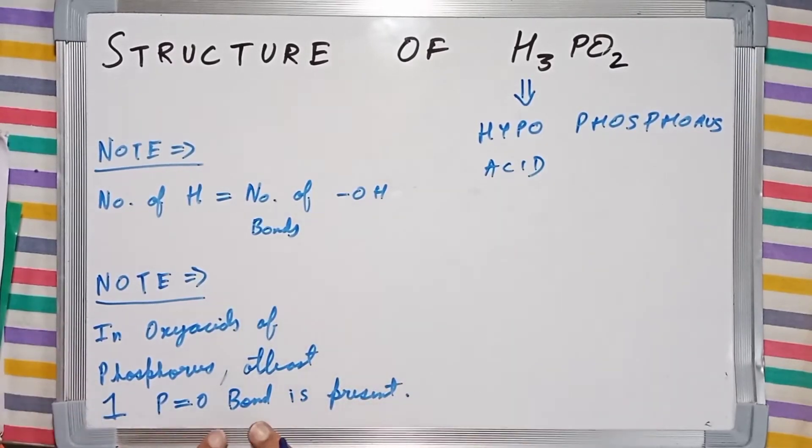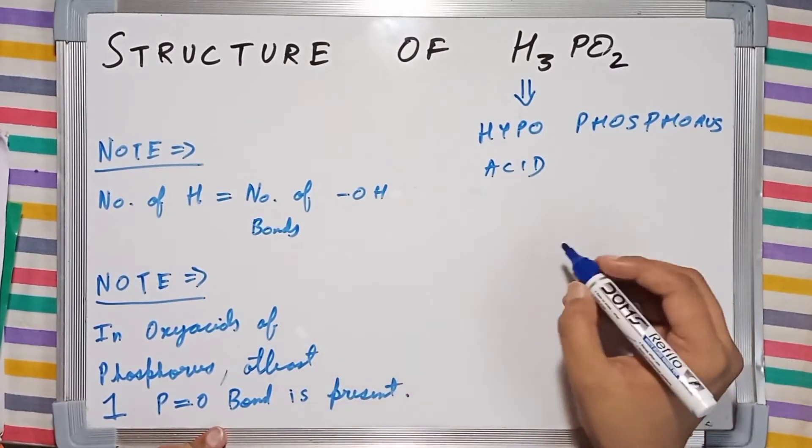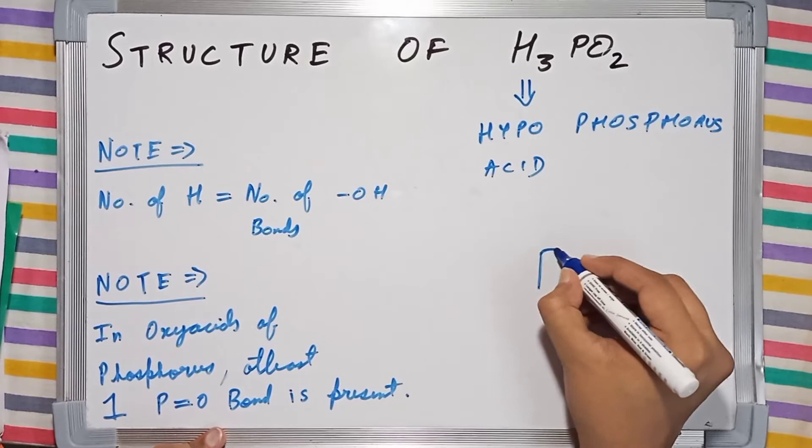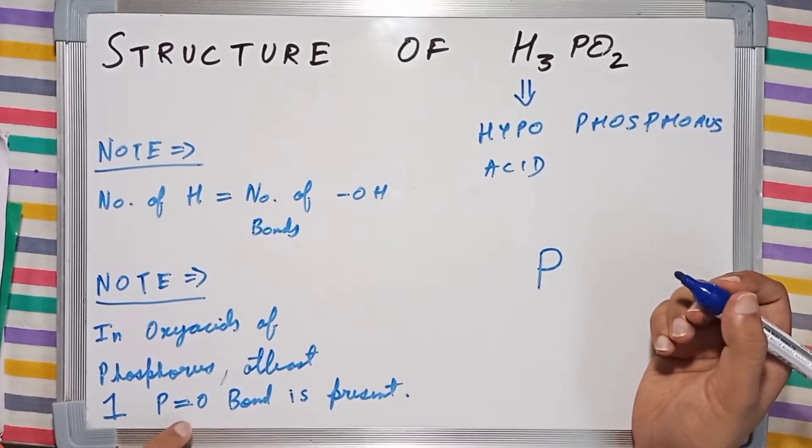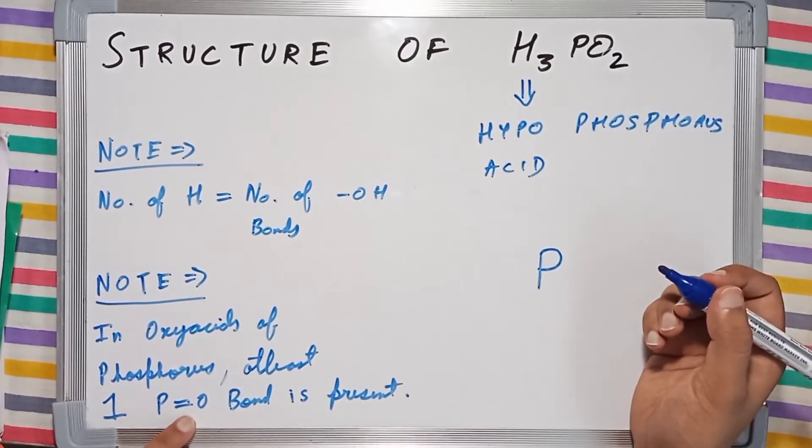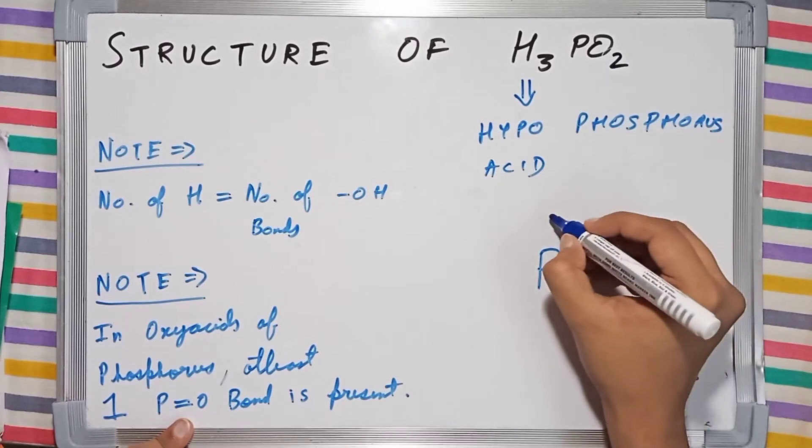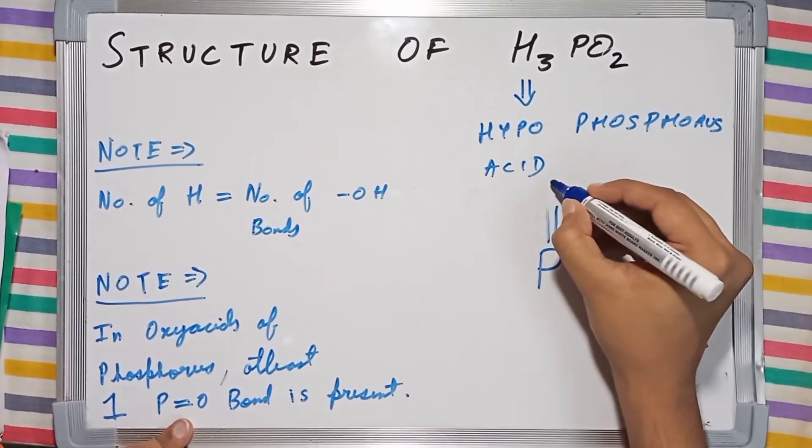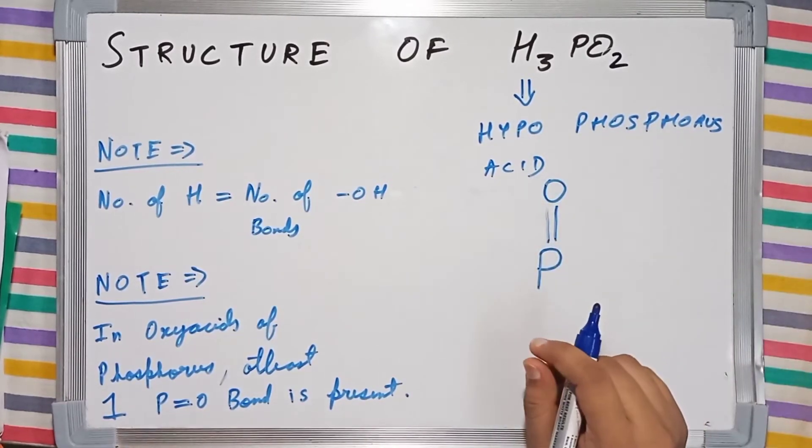Now first, we are going to go with the second note. We write the central atom phosphorus, and at least a single P=O must be present. So we are going to draw a single P=O bond.